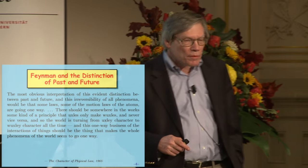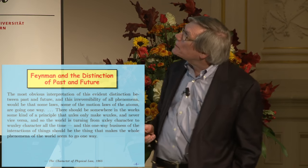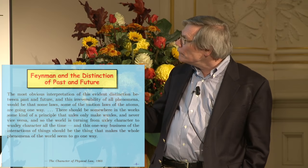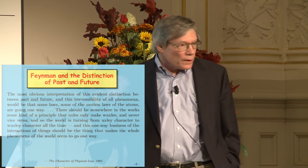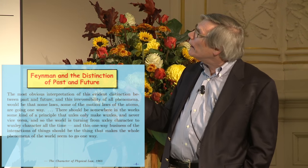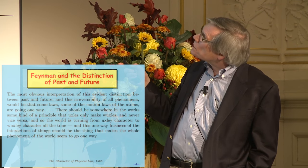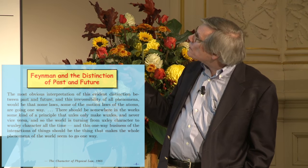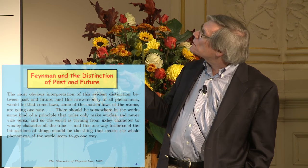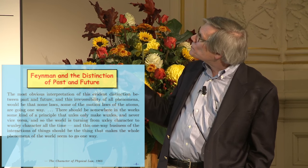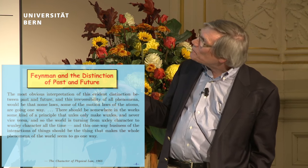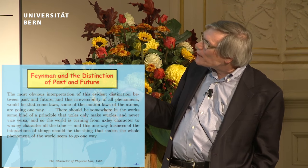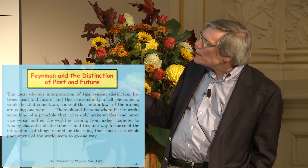Some interesting comments about this problem were made by Richard Feynman in his book The Character of Physical Law, published in 1965 — these were public lectures similar to this. He has a whole lecture on the distinction between the future and the past. He said the most obvious interpretation of this evident distinction between past and future and the irreversibility of all phenomena would be that some of the motion laws of the atoms are going one way — there should be somewhere in the works some kind of a principle that uxels only make wuxels and never vice versa, so the world is turning from uxley character to wuxley character all the time.